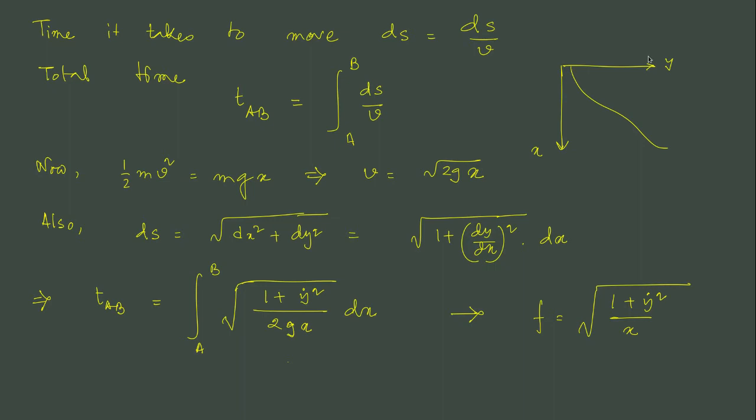Let us define this is y and this is x. It is a non-standard definition to make mathematics easier. For a line segment ds along the length, time it takes to move ds amount is ds by v, that is dt.